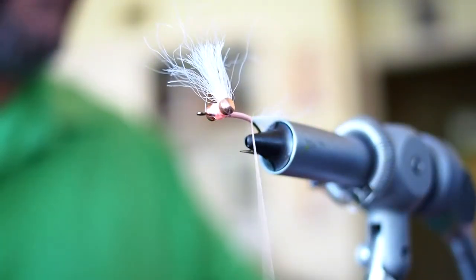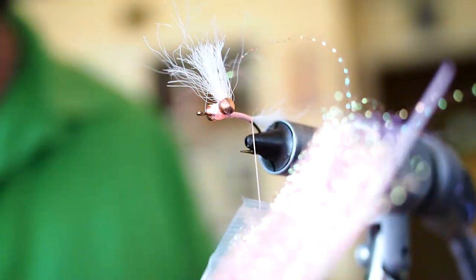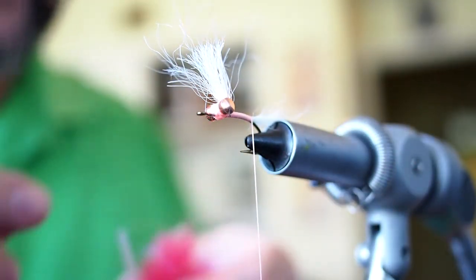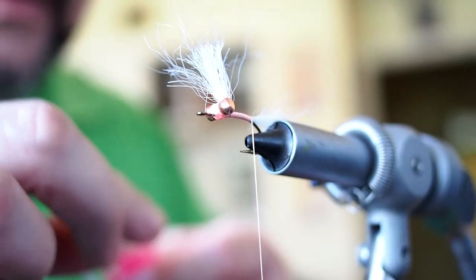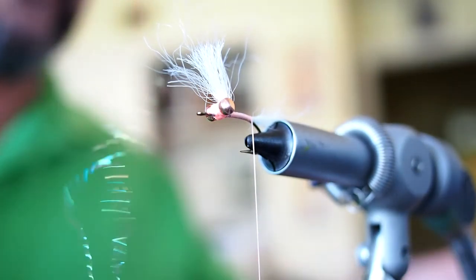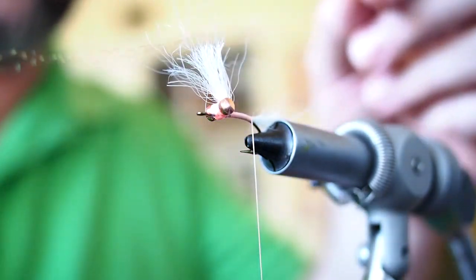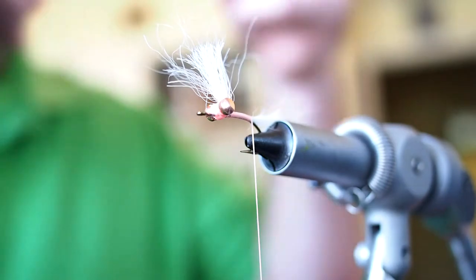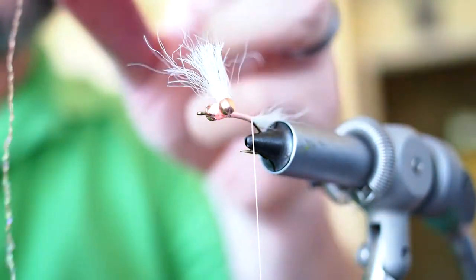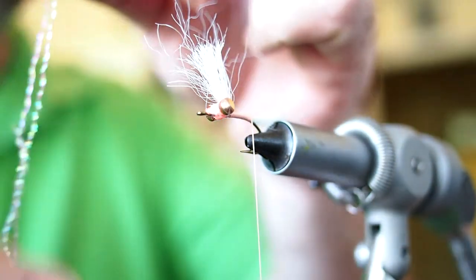Now what we're going to do is take two or three strands of pink crystal flash. It doesn't have to be perfect. What I like to do is wet it with your tongue. Makes it easier to work with.